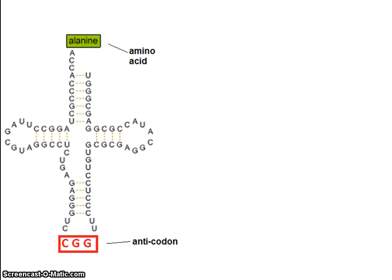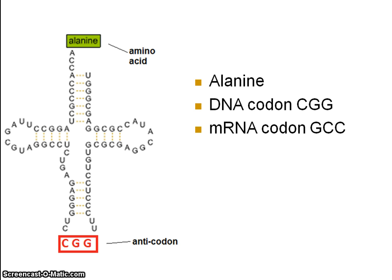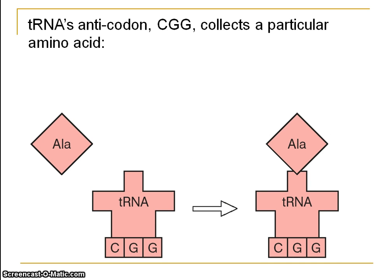Here's a different amino acid — alanine. The DNA codon for alanine is CGG. So the messenger RNA complementary base code would be GCC, and the anti-codon for the transfer RNA molecule would be CGG. The transfer RNA molecule with anti-codon CGG picks up the appropriate amino acid alanine according to its anti-codon triplet code, they bind together, and then the transfer RNA molecule delivers the amino acid to the ribosome.